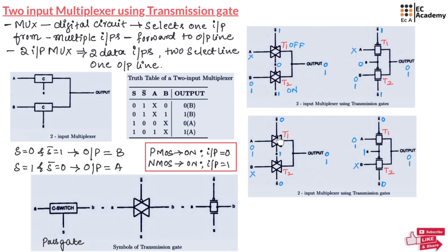In transmission gate 1, PMOS will be on and NMOS will also be on. In transmission gate 2, PMOS will be off and NMOS will also be off. Hence, transmission gate 1 will be on and transmission gate 2 will be off. So irrespective of what input B is having, if A is equal to 0, output will be equal to 0, and if A is equal to 1, output will be equal to 1. The similar operation is shown in this truth table — depending upon S and S bar, the output is chosen as A or B. If S is equal to 0, B is selected as output with A as don't care. If S is equal to 1, A is chosen as output with B as don't care.